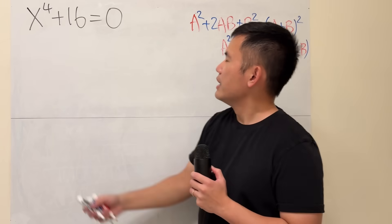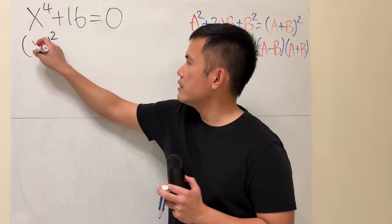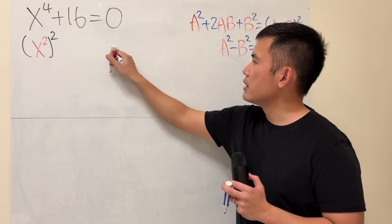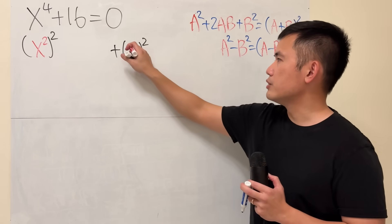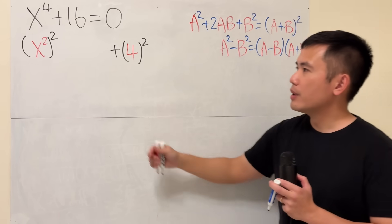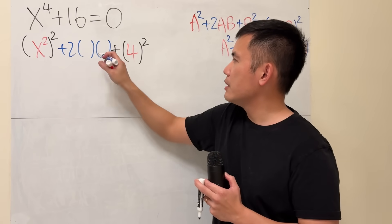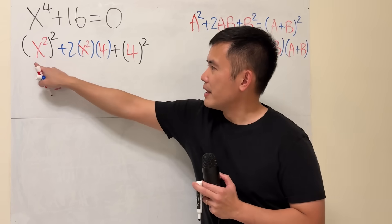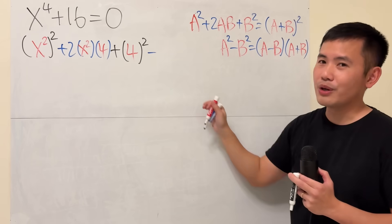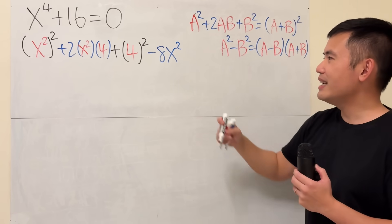The first term x to the fourth is like x-squared, squared. The 16 is 4-squared. To make the first three terms factorable as a perfect square, we add the middle term 2 times x-squared times 4, which is 8x-squared. But we must also subtract 8x-squared to keep the equation unchanged. So we have x-squared plus 4, all squared, minus 8x-squared, still equal to 0.